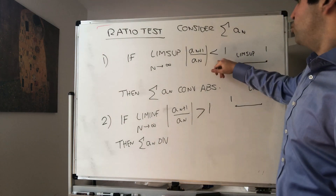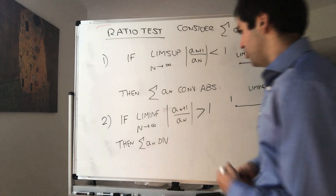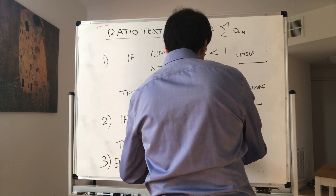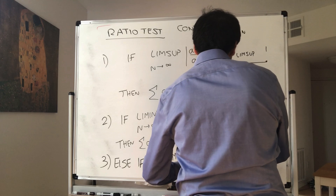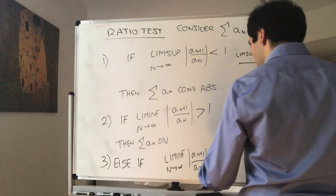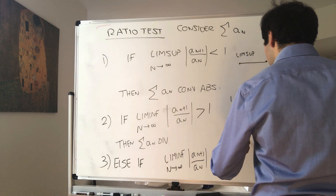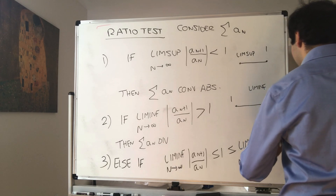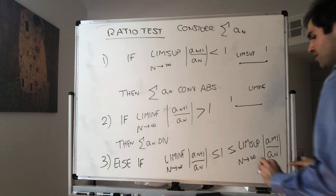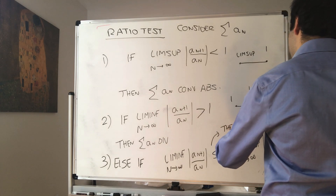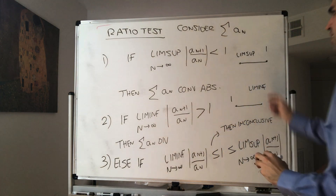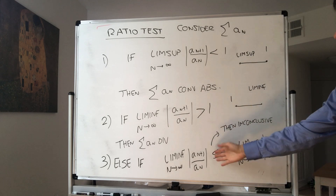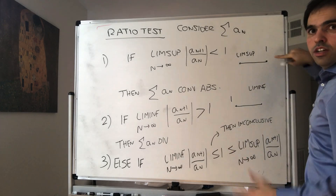Else, if the lim sup isn't bad and the lim inf isn't too big either — so if the lim inf as n goes to infinity of a_{n+1} over a_n is less than or equal to 1, and the lim sup of a_{n+1} over a_n is greater than or equal to 1 — so if we're in neither of those two extreme cases, then it's inconclusive.